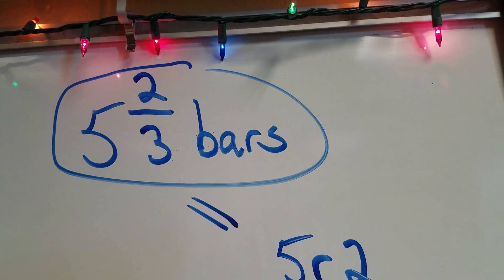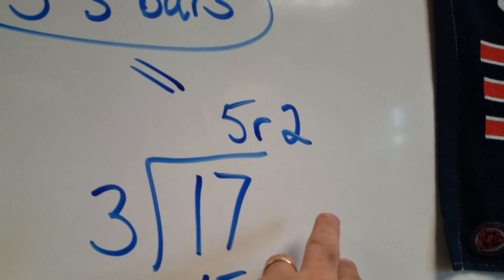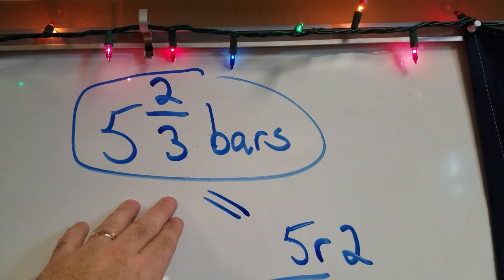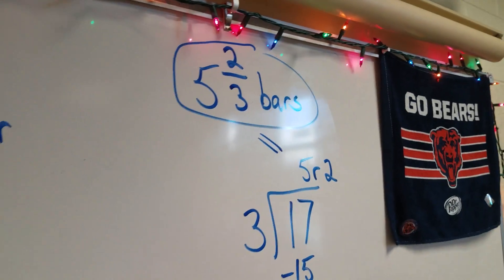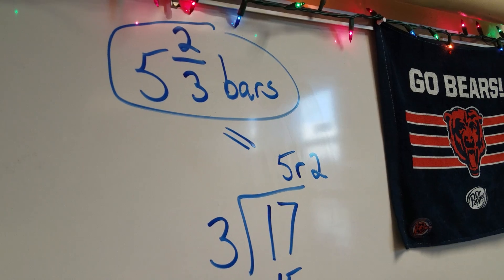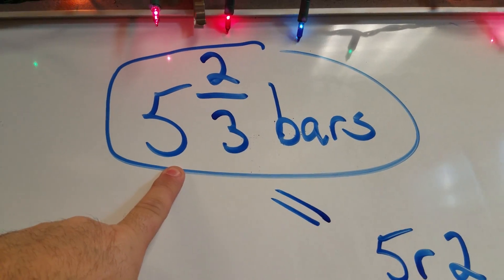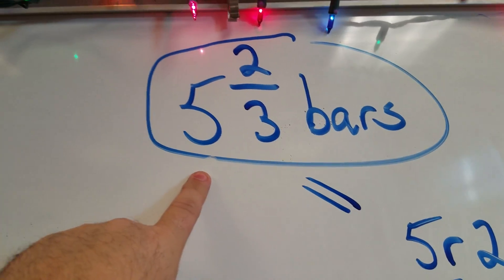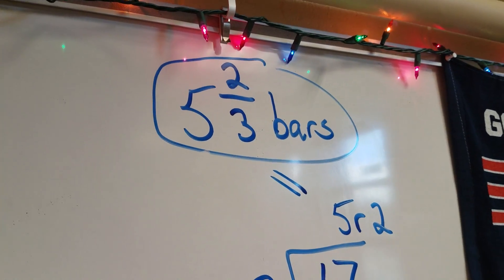So it depends on the question. The question says, how much will they get equally? Well, by putting my remainder over my divisor, I can say each friend will get 5 and 2 thirds bar. Now, some questions in the homework may say, how many whole bars of chocolate will they get? Or how many whole whatevers will they get? In that case, the answer would be 5, because there are only 5 whole bars. This question says, how much will they get equally? So it's 5 and 2 thirds of a bar. I hope that helps. Have a good night.